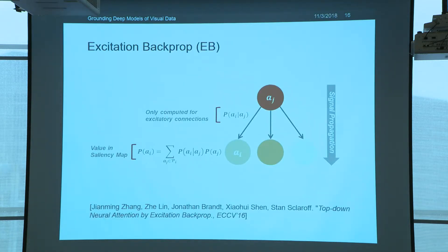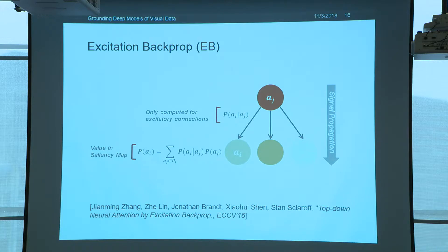We use the formulation of Zhang et al. for this spatial grounding demo. It's a probabilistically interpretable approach where you normalize a probability distribution at every level of the network. In this case, J is closer to the classification layer and I is a shallower layer.